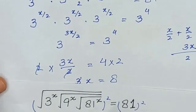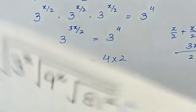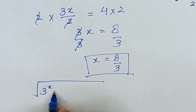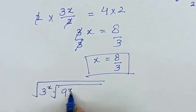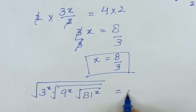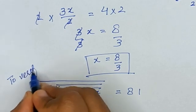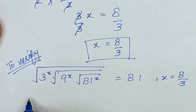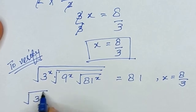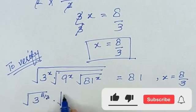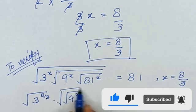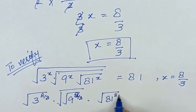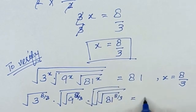Now we will check whether this value of x satisfies our given equation. The given equation is 3 raised to the power x, times the square root of 9 raised to the power x, under the square root of 81 raised to the power x, equal to 81. Substituting x equal to 8 divided by 3: 3 raised to the power 8/3, times the square root of 9 raised to the power 8/3, under the square root of 81 raised to the power 8/3, equal to 81.